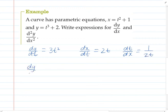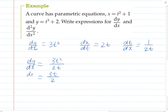So to find dy/dx we have to multiply these two derivatives together, and so that's going to be 3t squared over 2t, which will simplify to 3t over 2. So that's our first derivative.